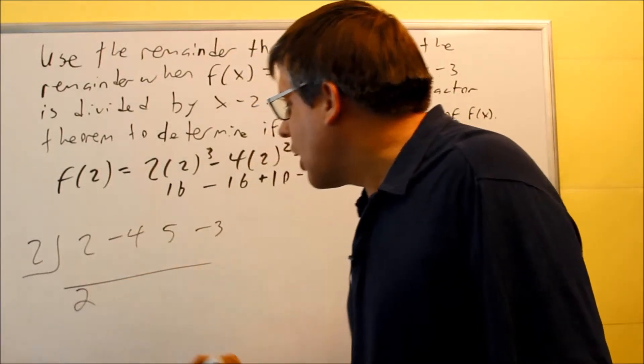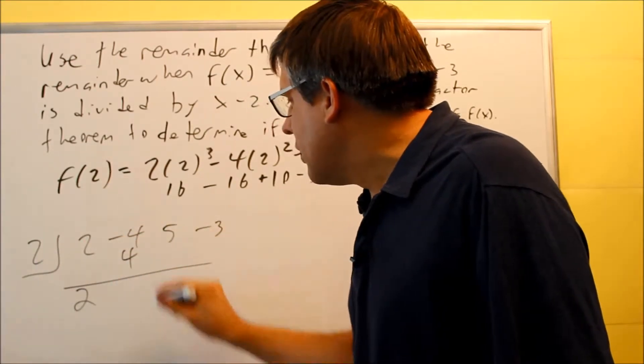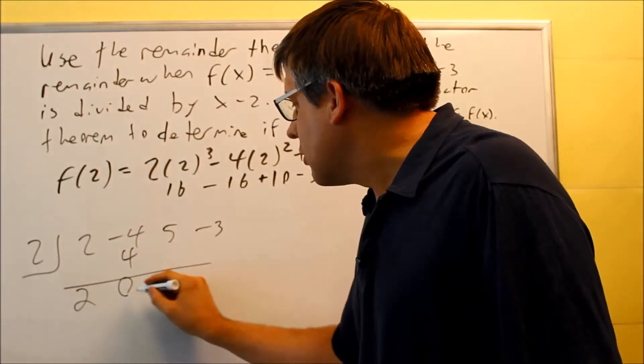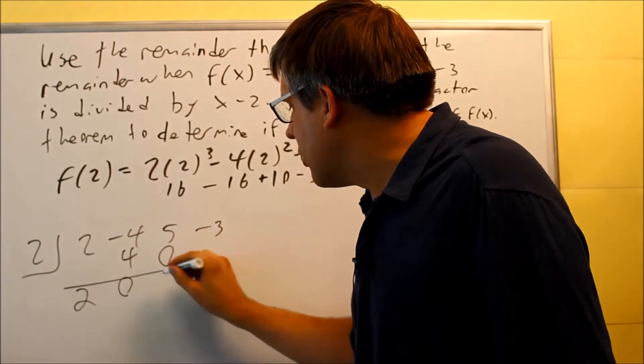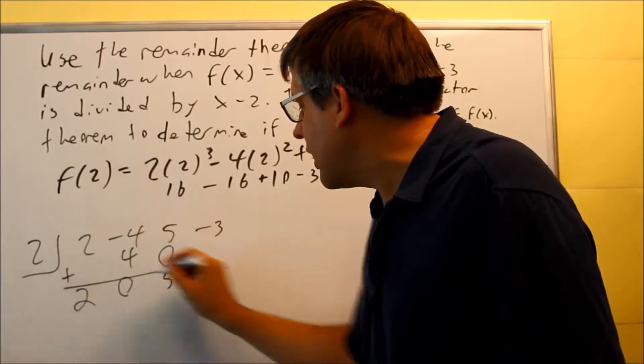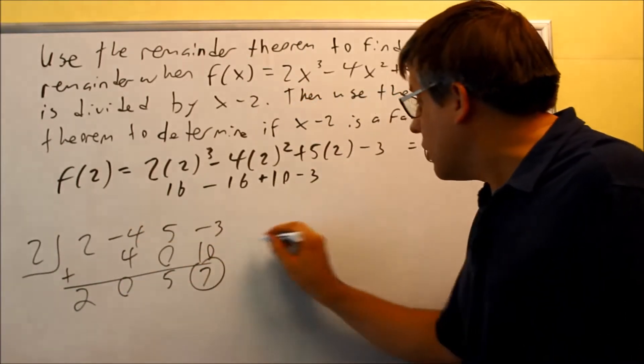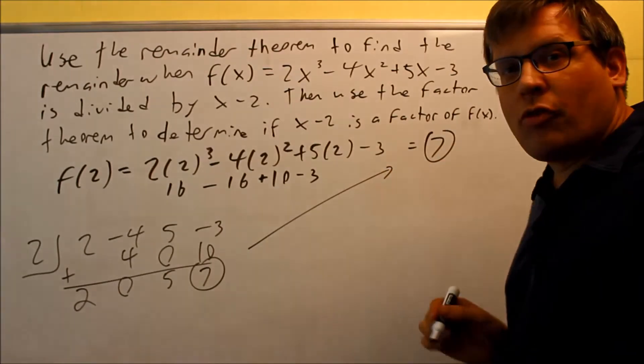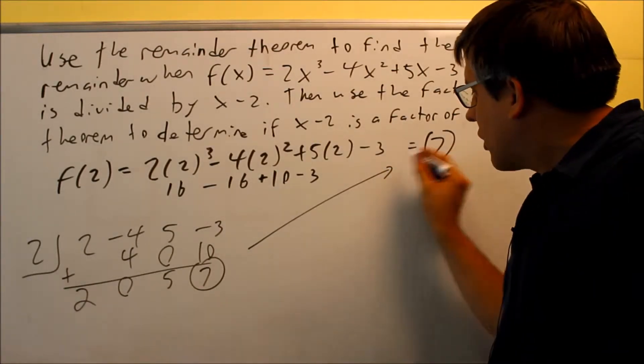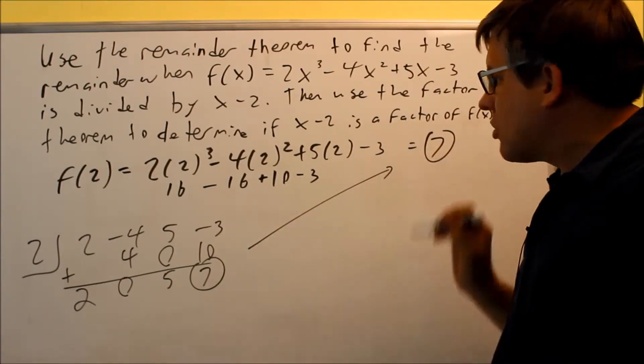2 drops down, and I get 2 there. Multiply that together, you get 4. Add this together, you get 0. Multiply, you get 0. And we're always going to do addition when you have synthetic division. 5 is there. Multiply, and we get 7. Oh, look at that. 7, that's the same as what we got before. Okay? It's not a coincidence that this ended up giving us exactly the answer as before.